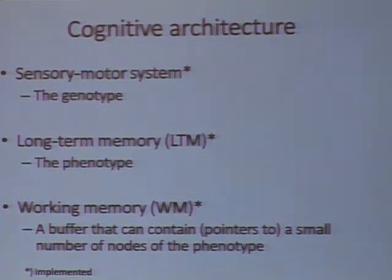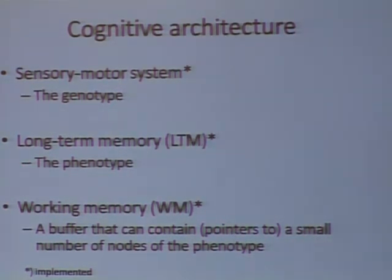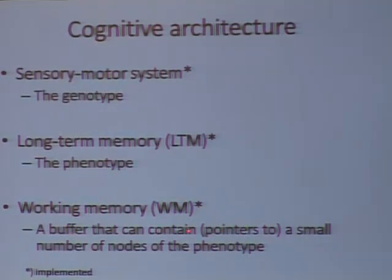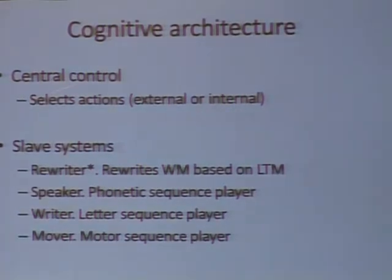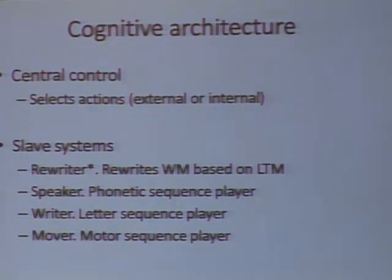We took this one step further and developed it into something like a cognitive architecture, with a sensory-motor system, a genotype, and phenotypes that grow as described — serving as long-term memory. We also have a working memory, which is a buffer that can contain pointers to a small number of nodes of the phenotype — let's say 7. We also have a rewriter, which rewrites expressions based on information in the long-term memory.